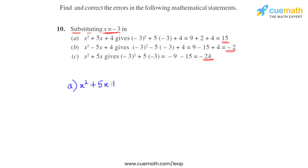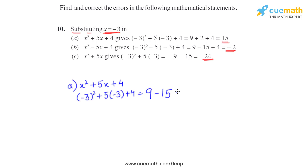For part a, x squared plus 5x plus 4, substituting x as minus 3: it becomes minus 3 whole square plus 5 into minus 3 plus 4. Minus 3 whole square means minus 3 multiplied by minus 3, which is positive 9. Then 5 into minus 3 is minus 15, plus 4. So 9 plus 4 is 13, and 13 minus 15 is minus 2. The correct answer is minus 2, not 15.